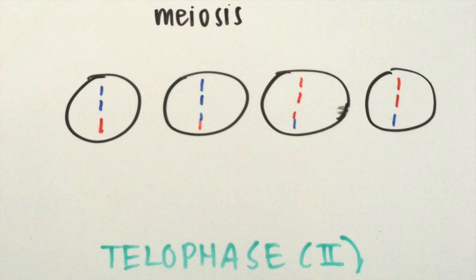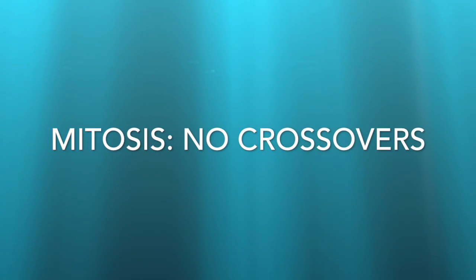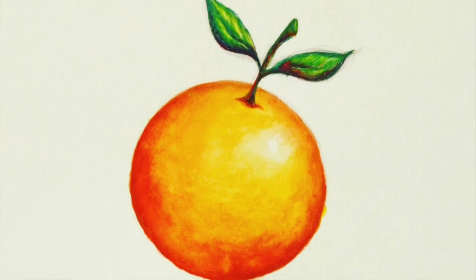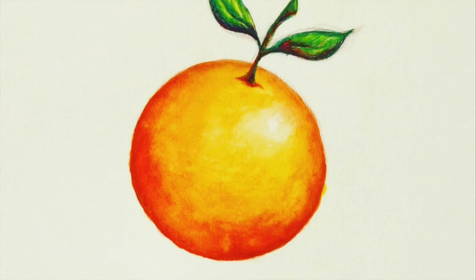Finally, we know that there's no crossing over occurring in mitosis since the chromosomes are only from one person. I hope this video helped you understand the differences between mitosis and meiosis. Hope to see you soon in another video!